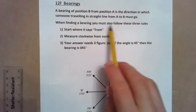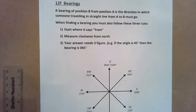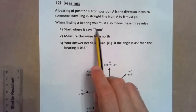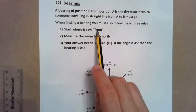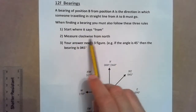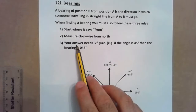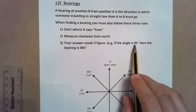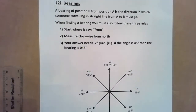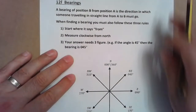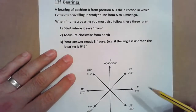When we're working with bearings we need to follow three rules. We need to make sure we focus on the word 'from', because this is where the angle is measured from. We measure clockwise from north, and the answer needs to be three figures. So if you get an answer of 45 degrees, the bearing is 045 degrees.